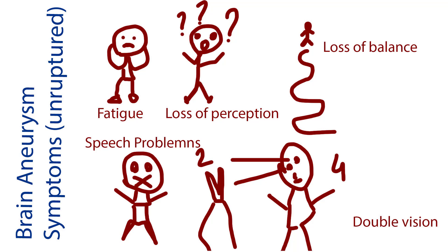Symptoms can occur when the aneurysm pushes on a structure. In the brain, symptoms depend on whether the aneurysm has ruptured or not. There may be no symptoms at all until rupture. For an unruptured aneurysm, symptoms can include fatigue, loss of perception, loss of balance, speech problems, and double vision.